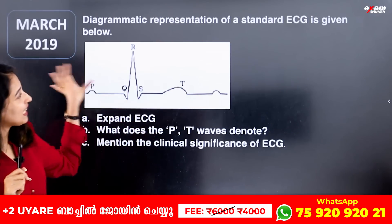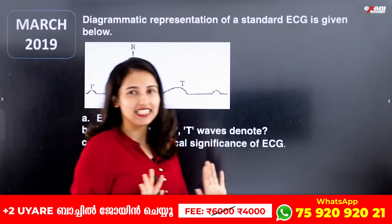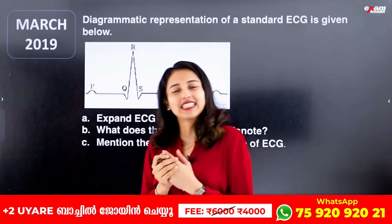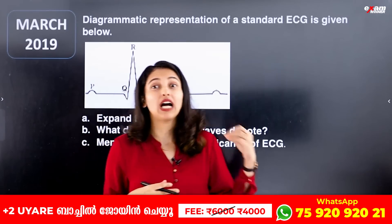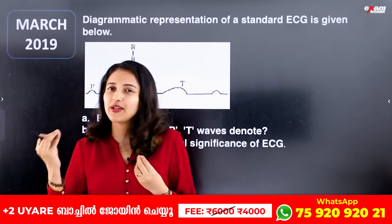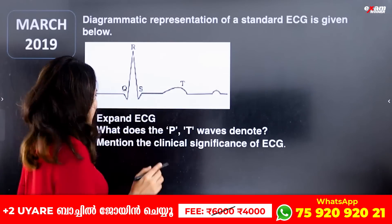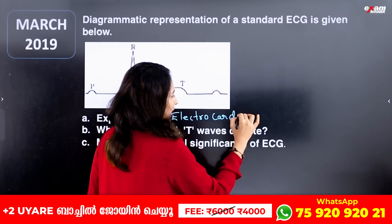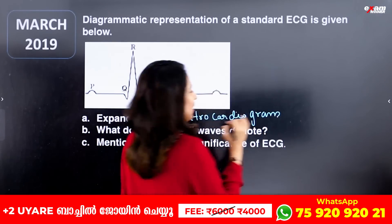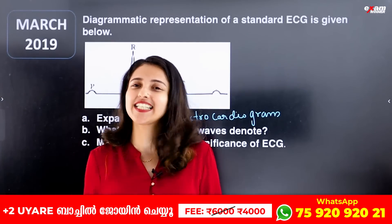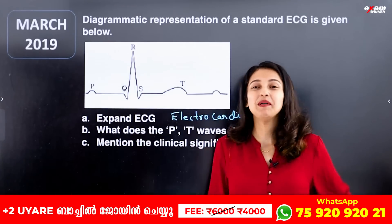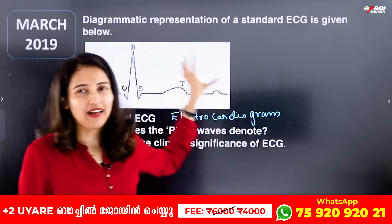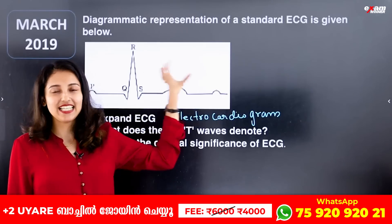The next question: a Diagrammatic Representation of a Standard ECG is given. Expand ECG. Some students are confused — the accurate answer, as stated in the textbook, is that ECG stands for Electrocardiogram. Electrocardiogram is the machine used to record it, and the graphical representation produced is also called an ECG or Electrocardiogram.